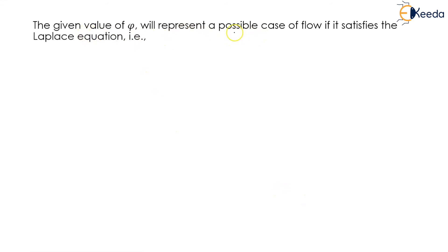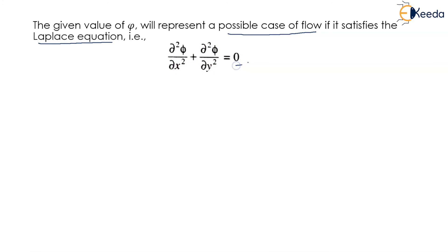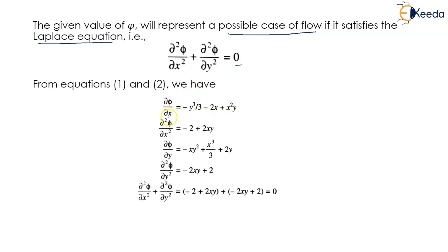The given value of ψ will represent a possible case of flow if it satisfies the Laplace equation: ∂²ψ/∂x² + ∂²ψ/∂y² = 0. From equations 1 and 2, differentiating again: ∂²ψ/∂x² = -2 + 2xy (equation 3), and ∂²ψ/∂y² = -2xy + 2 (equation 4).